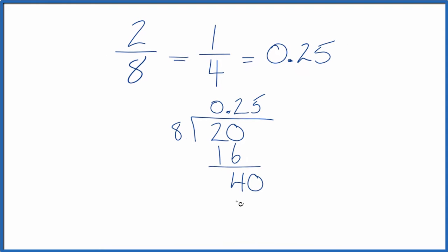5 times 8, that's 40, with no remainder. So when we divide 8 into 2, we get 0.25.